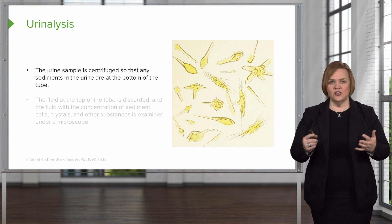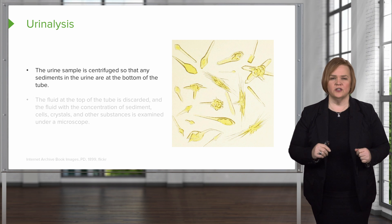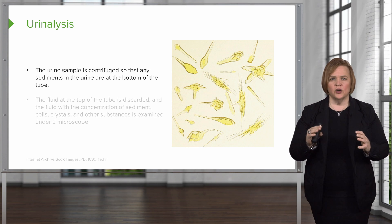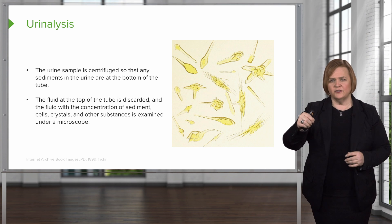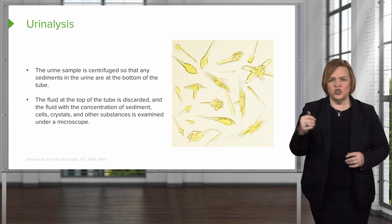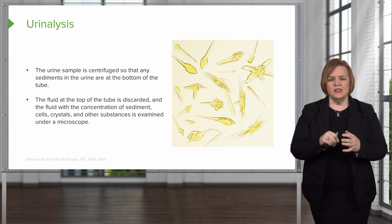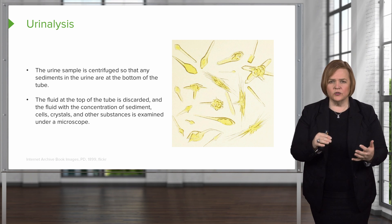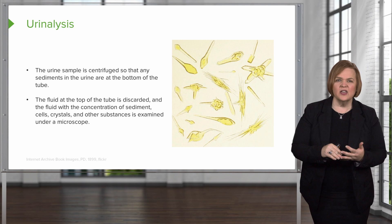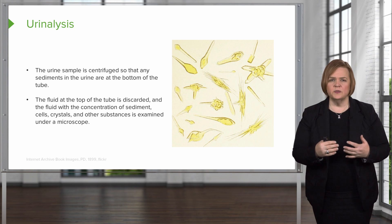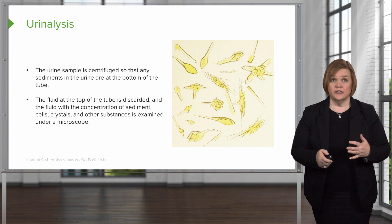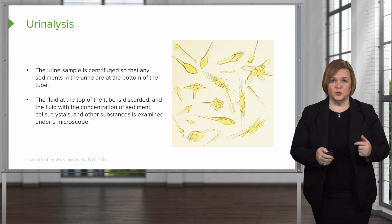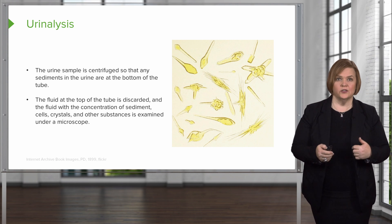Here's what urinary sediment is. They take the urine and centrifuge it, so any sediment in the urine settles to the bottom of the tube. Then they pour off the fluid on top, shake it up again, and look under a microscope at the sediment, cells, crystals, or other substances that might be there. This part of a urinalysis — looking at urinary sediment — requires a microscope to look for all these special types of cells and other substances.